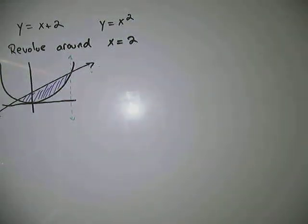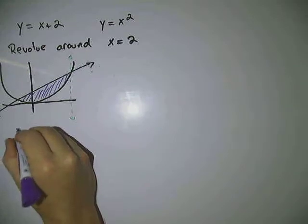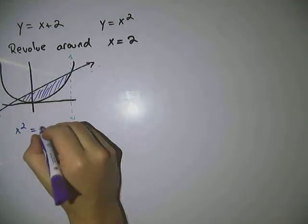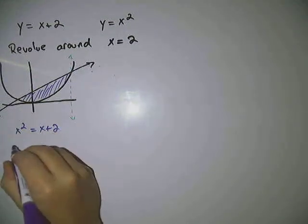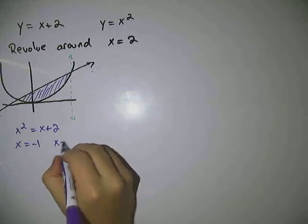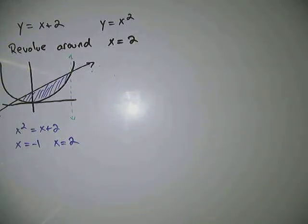And we can check those intersections of those two functions real quick by setting x squared equal to x plus 2 and solving, and you'll get two solutions: x equals negative 1 and x equals positive 2.